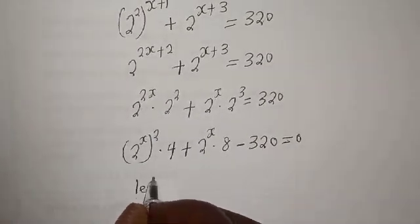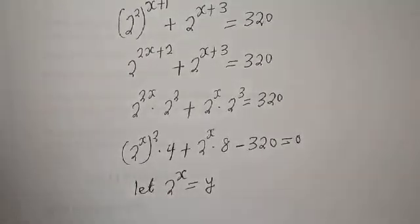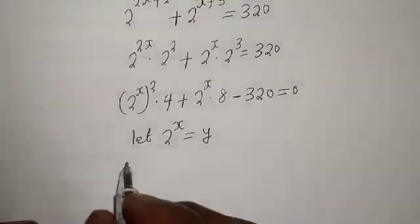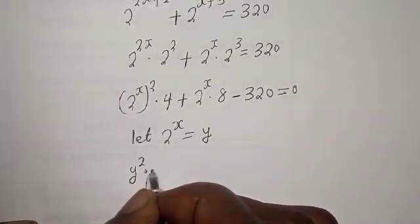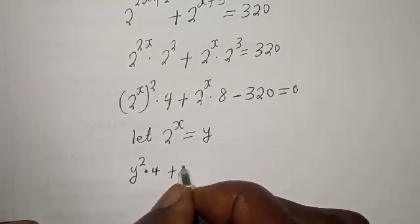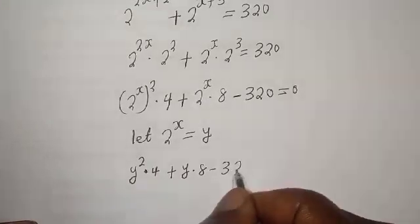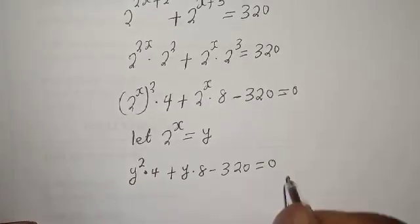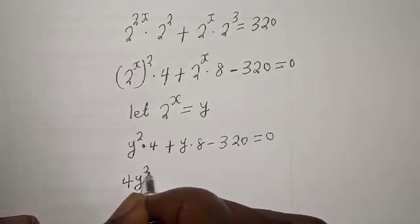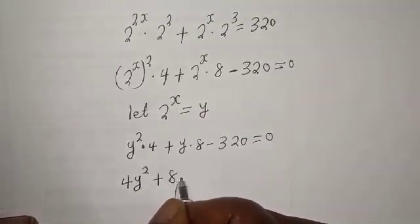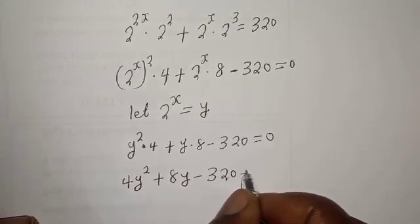Now, let 2 raised to power x equal y. Then y squared multiplied by 4, plus y multiplied by 8, minus 320, is equal to 0. So, 4y squared plus 8y minus 320 is equal to 0.